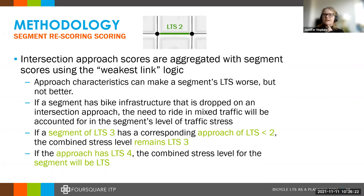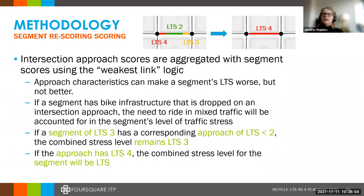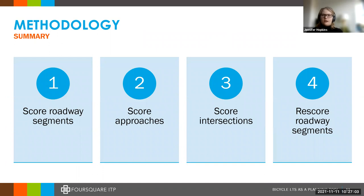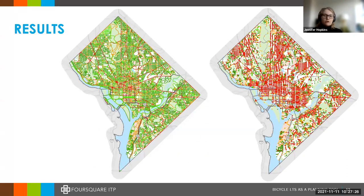In the second scenario, if a roadway is LTS 2 and its approaches are LTS 4 and 3, it wouldn't be accurate to say it is an LTS 2, because the cyclist would have to travel through LTS 3 or LTS 4 to leave the segment. So the roadway segment takes on the highest score of the approaches, which in this case is LTS 4. In summary: first we score roadway segments, then score the approaches, then score the intersections, then we rescore roadway segments using the approach scores. That gives us our final roadway and intersection scores.